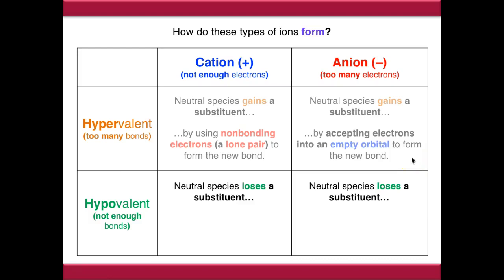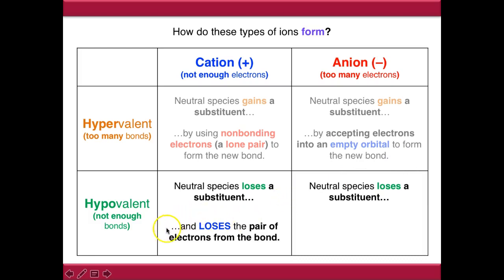If we look at the hypovalent ions, we know that we need to lose a substituent because hypovalent ions aren't making enough bonds. In the case of hypovalent cations, when we lose the substituent, we need to lose the pair of electrons from that bond - that pair of electrons needs to go away from our molecule.